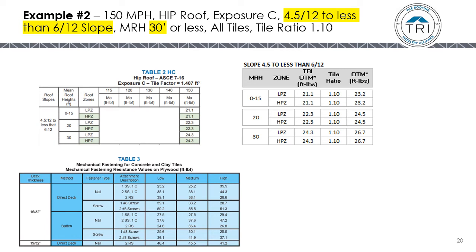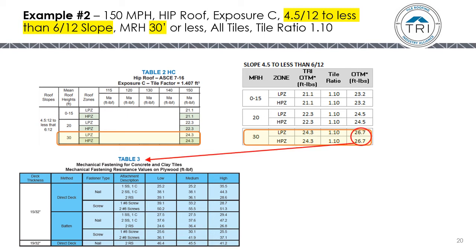For example two, we stay at a hip roof, Exposure C, but go to a 4.5:12 to less than 6:12 slope roof. Step one: Table 2HC. Step two: the LPZ and HPZ uplift moments are both 26.7 after factoring in the tile ratio. Step three: in Table 3, the fastening methods for low profile, medium profile, and high profile tiles all exceed 26.7.